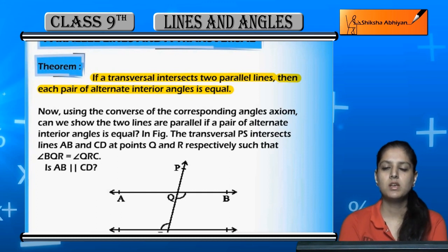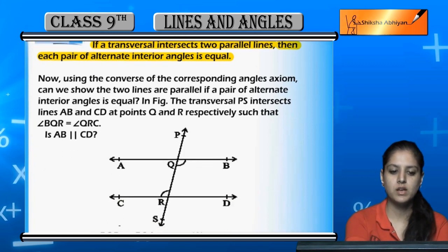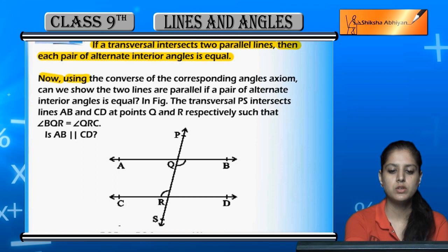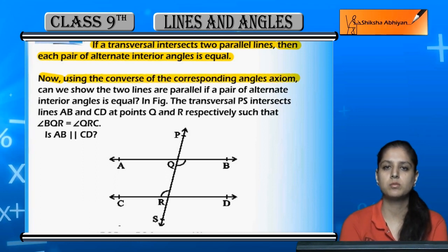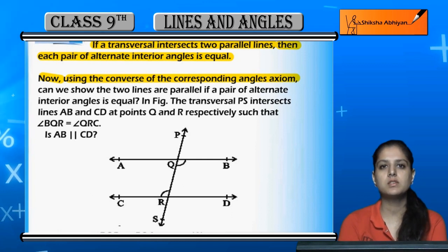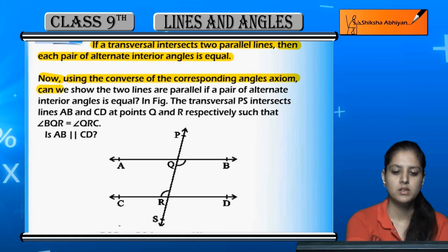Now using the converse of the corresponding angles axiom which we have studied, can we show the two lines are parallel if a pair of alternate interior angles is equal?